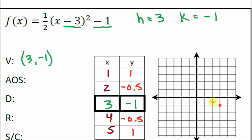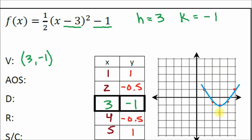Let's graph these points: vertex (3, −1), then (2, −0.5), (1, 1), (4, −0.5), and (5, 1). That shape looks like a parabola. Let's draw a nice parabola through those points and put arrows on the ends. There's our parabola.